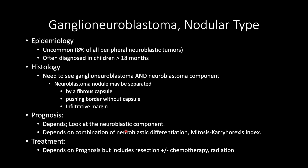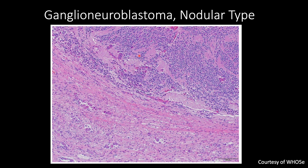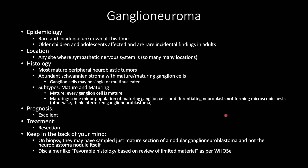Treatment includes resection plus or minus chemotherapy and radiation. Here is an image courtesy of the WHO 5th edition showing a neuroblastoma nodule alongside the more mature element, either a ganglioneuroblastoma or ganglioneuroma. You can also see this neuroblastoma nodule histologically, again courtesy of the WHO 5th edition.